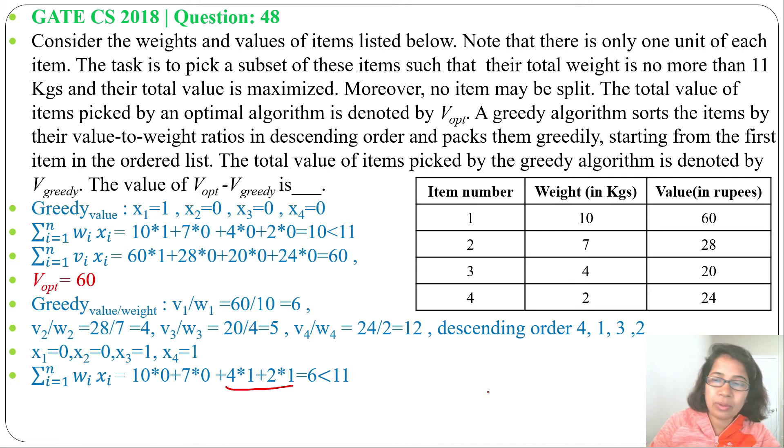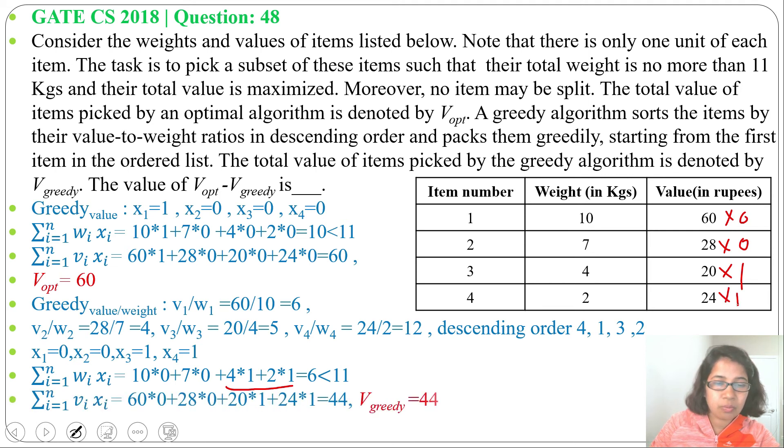Next we will find total value: 60×0 + 28×0 + 20×1 + 24×1 = 44. So V_greedy equals 44.